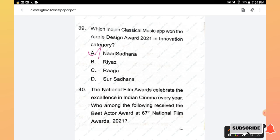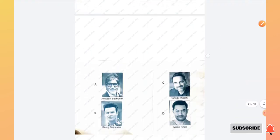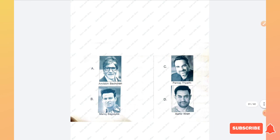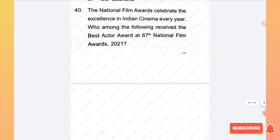Question number 40: The National Film Awards celebrate the excellence in Indian cinema every year. Who among the following received the Best Actor Award at 67th National Film Awards 2021? Options are Amitabh Bachchan, Pankaj Tripathi, Manoj Bajpayee, and Ayushmann Khurrana. The right answer is the Best Actor Award at 67th National Film Award was won by option B, Manoj Bajpayee.